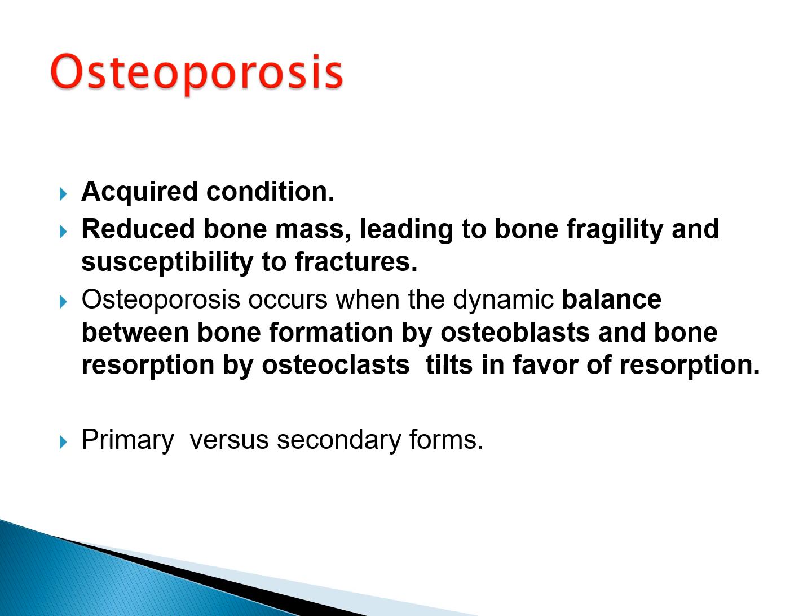Osteoporosis occurs when the dynamic balance between bone formation and bone resorption tilts toward bone resorption. Bone formation is performed by osteoblasts, while bone resorption is performed by osteoclasts. There should be a balance between them, but in osteoporosis, more resorption of bone takes place. We have a primary osteoporosis and secondary forms of osteoporosis.